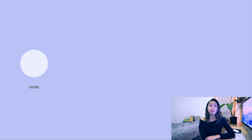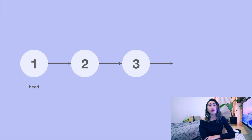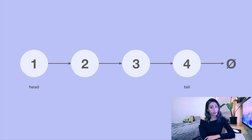A linked list is a sequential collection of elements. Each element is called a node, and each node has two pieces of information: the data value itself and a pointer that references the next node in the list. The linked list has a head and a tail. The head node points to the second node, which points to the third node, and so on, until we reach the tail node that points to null, indicating the end of the list.